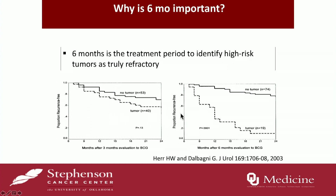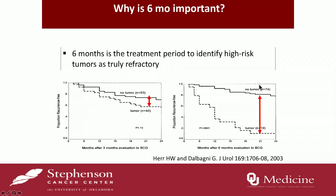Why is six months important? Six months is the time period at which patients truly declare themselves as refractory. If you give BCG for three months, scope the patient, and find cancer, they may still respond to another course. A study showed that looking at recurrence-free survival at three months versus six months, the true separation occurs at the six-month time point.